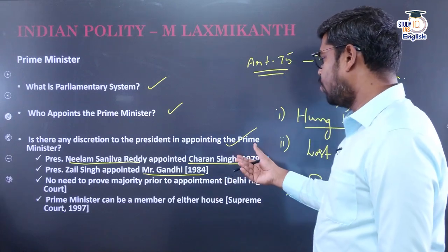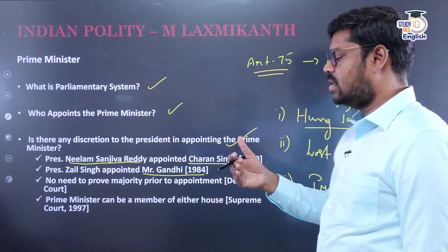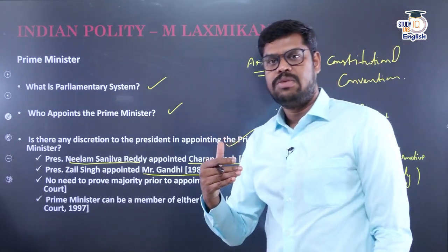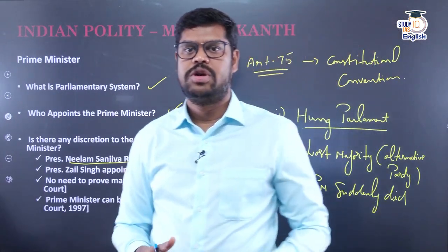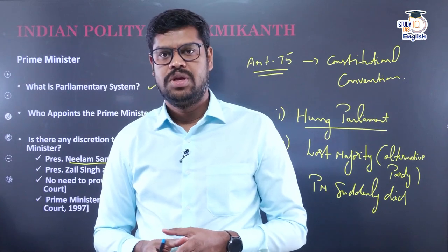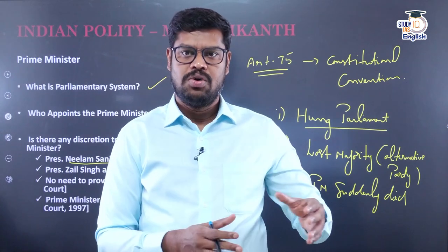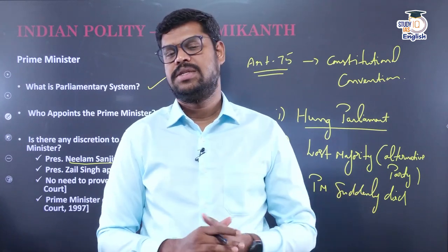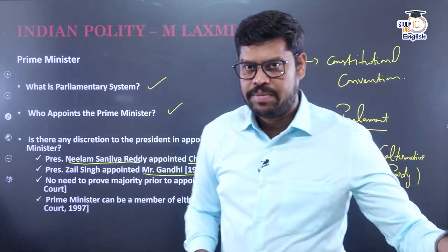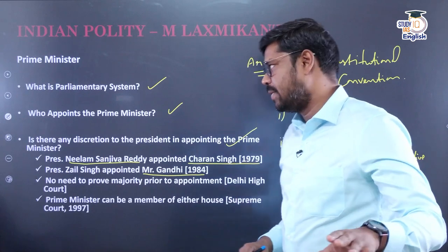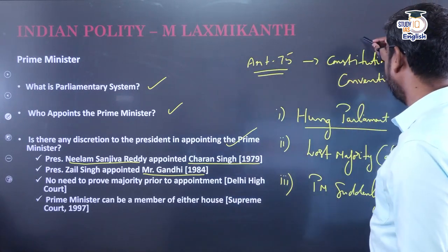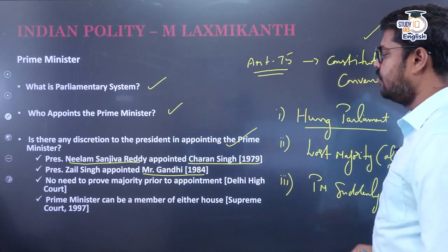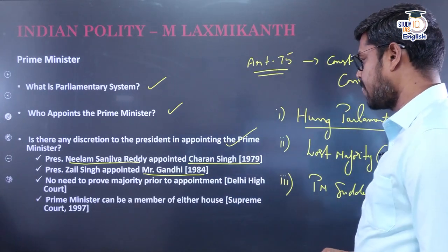In both cases, the President gave almost a month's time to prove their majority in the house. This is how the President can exercise his discretion with regard to the appointment of the Prime Minister; otherwise, he has to follow the constitutional convention.